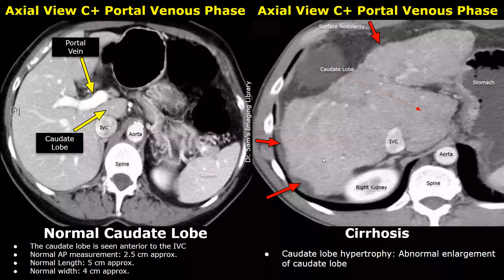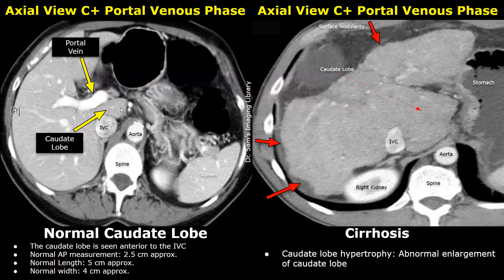These images focus on the caudate lobe. In an axial image, the caudate lobe is seen anterior to the IVC — the inferior vena cava. The normal AP measurement is approximately 2.5 centimeters, the normal length is approximately 5 centimeters, and the normal width is approximately 4 centimeters. In liver cirrhosis the caudate lobe can increase in size. In this image you can see an enlarged caudate lobe compared to the normal appearance. Surface nodularity and ascites are also present.